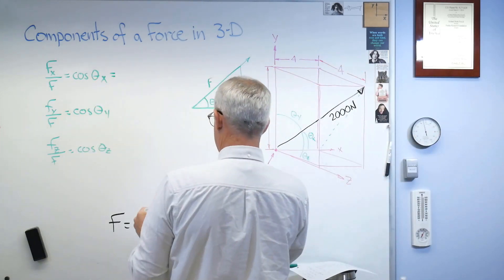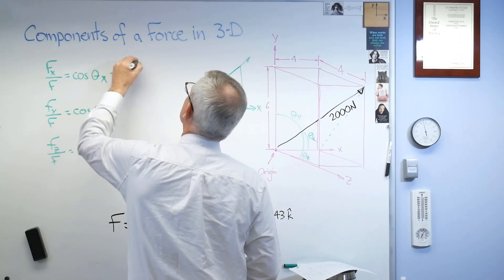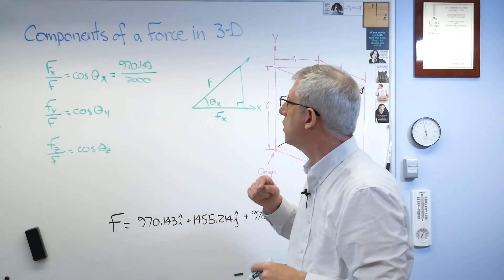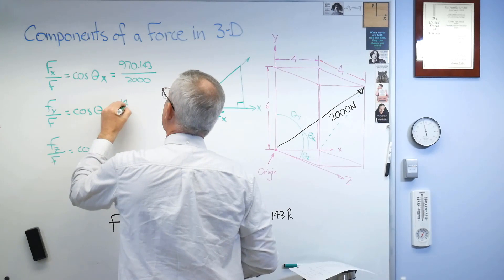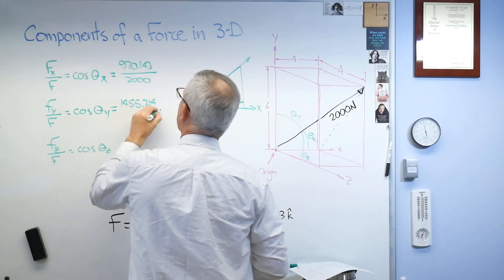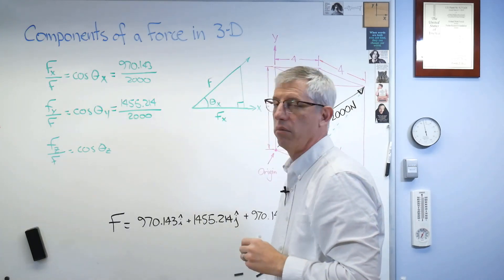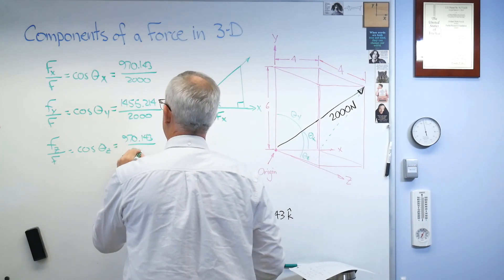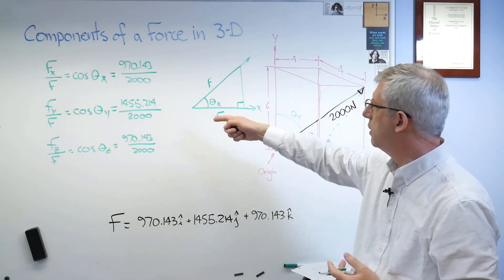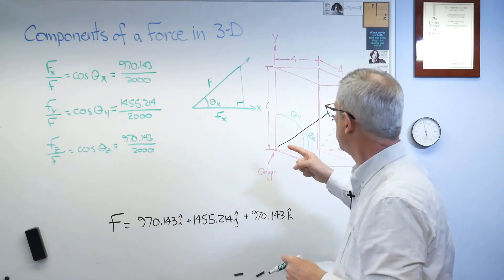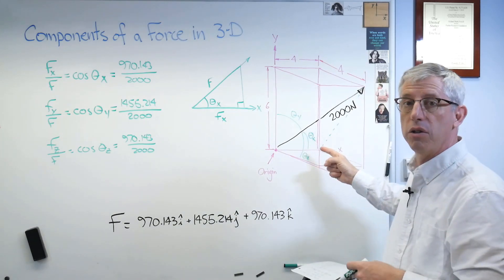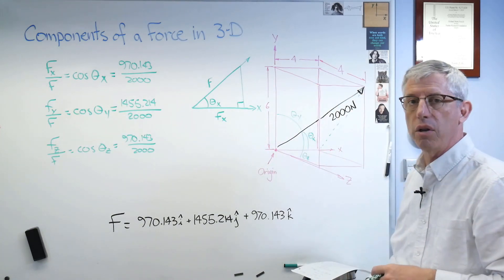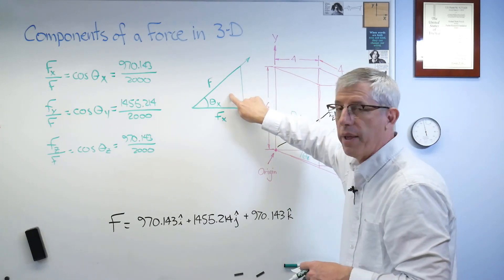And similarly, f of y over f equals cosine theta y and f of z over f equals cosine theta z. Well, that's so easy a professor could do it. Well, we already know what fx, fy, and fz are. There they are. They're right there. We already know. Well, hang on. That means this is, let's see, 970.143 over 2,000. It's newtons over newtons. The newtons cancel out, so I'll leave the units off there. Well, this one looks like 1455.214 over 2,000. And this one is 970 over 2,000. Well, that's not hard. This is easy now.